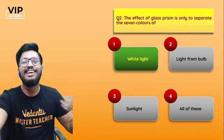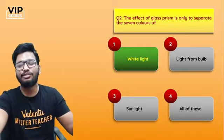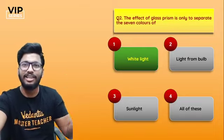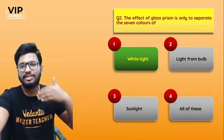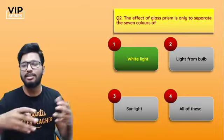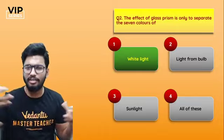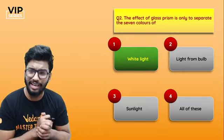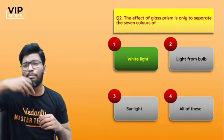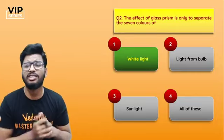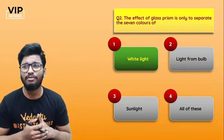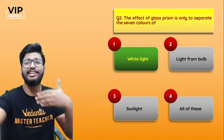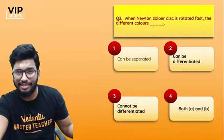White light is the combination of seven different colors. It appears white because all those wavelengths of light are moving at such high velocity that for a person seeing it, it appears as though it's white. Remember Newton's disc.